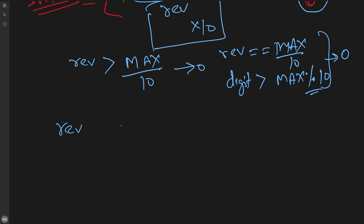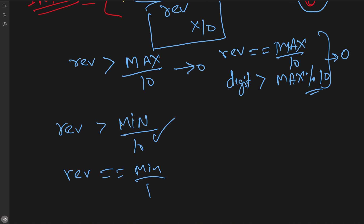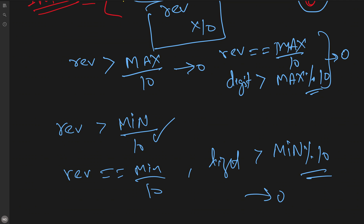For the negative side, we apply similar logic. If reverse is less than int_min // 10, return 0. If reverse equals int_min // 10 and the digit is less than int_min % 10, that is an underflow case, so we also return 0. This covers both the overflow and underflow boundary conditions.